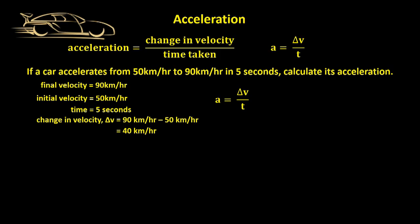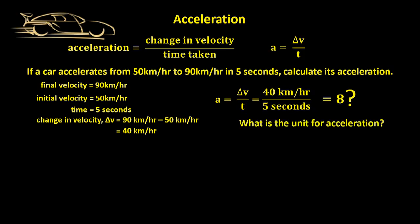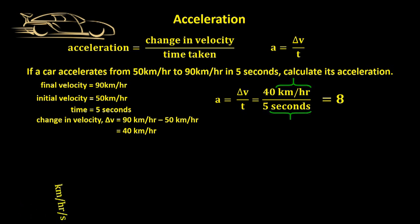So the acceleration of the car — which is the change in velocity per second — is 40 km per hour divided by 5 seconds, which equals 8. But 8 what? What is the unit for acceleration? In this case, the car has changed on average its speed by 8 km per hour every second, so its acceleration is 8 km per hour per second. It may seem a bit of a strange unit, but mathematically it makes perfect sense. The car changed its velocity by 8 km per hour per second.